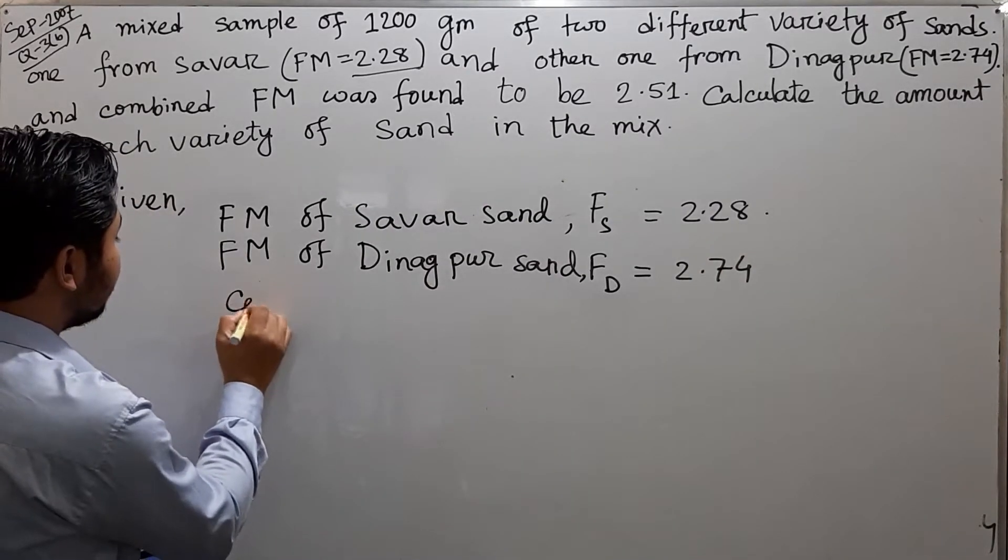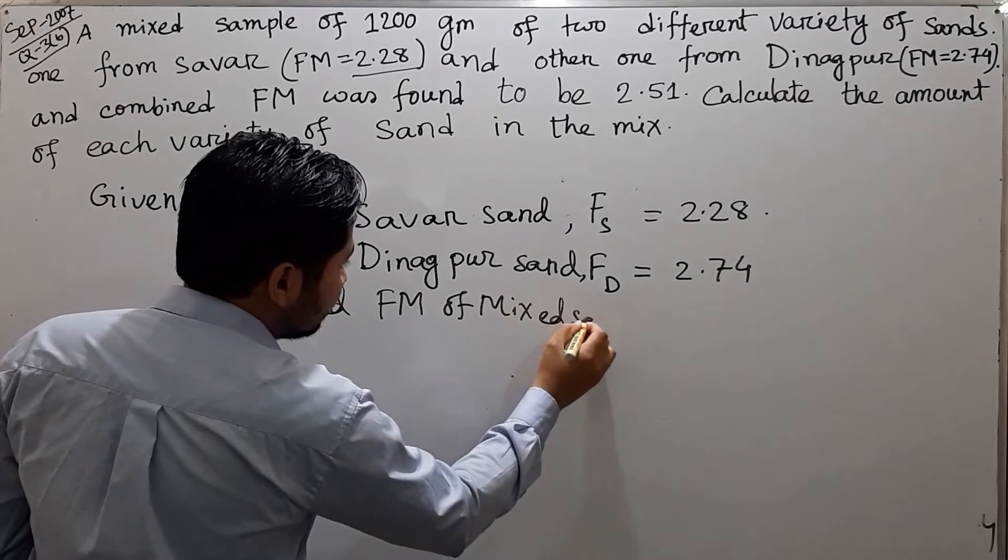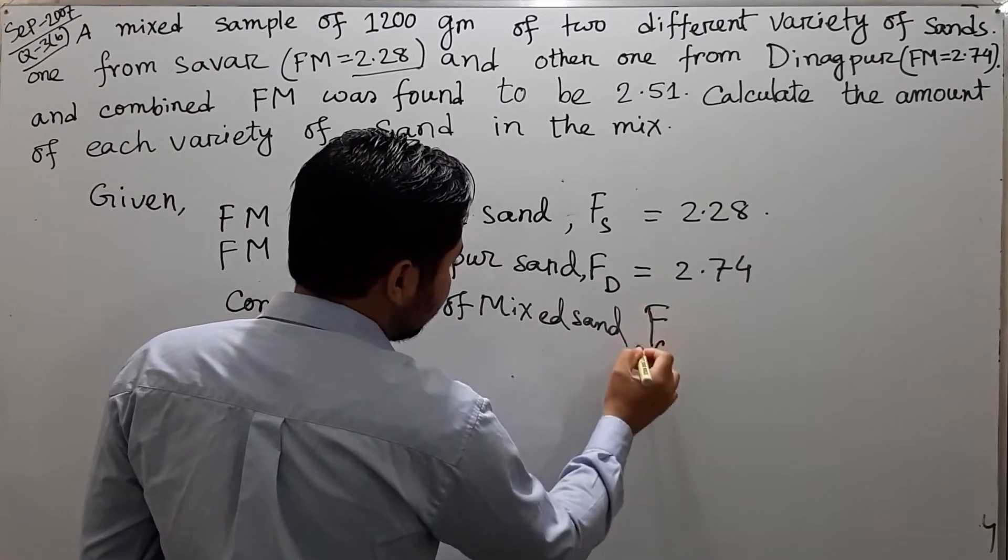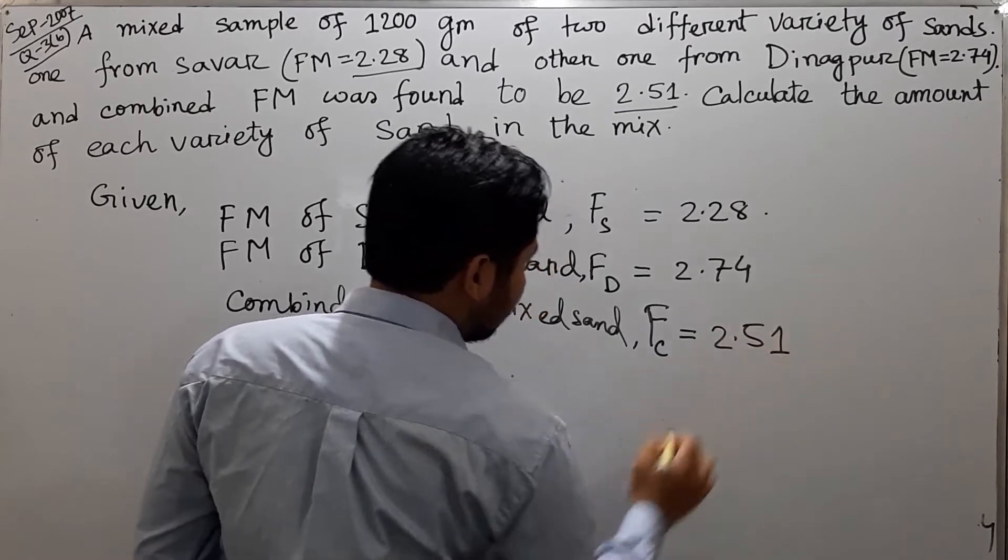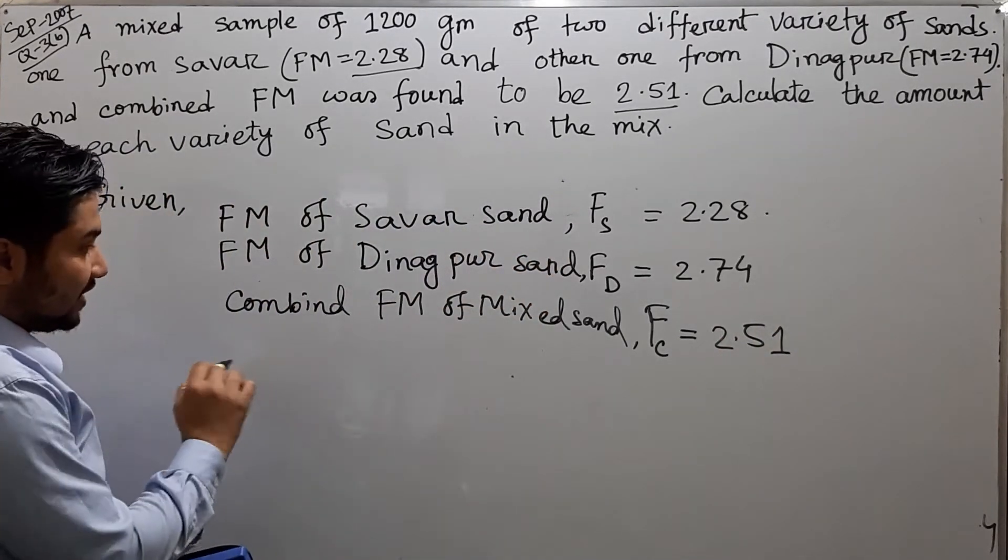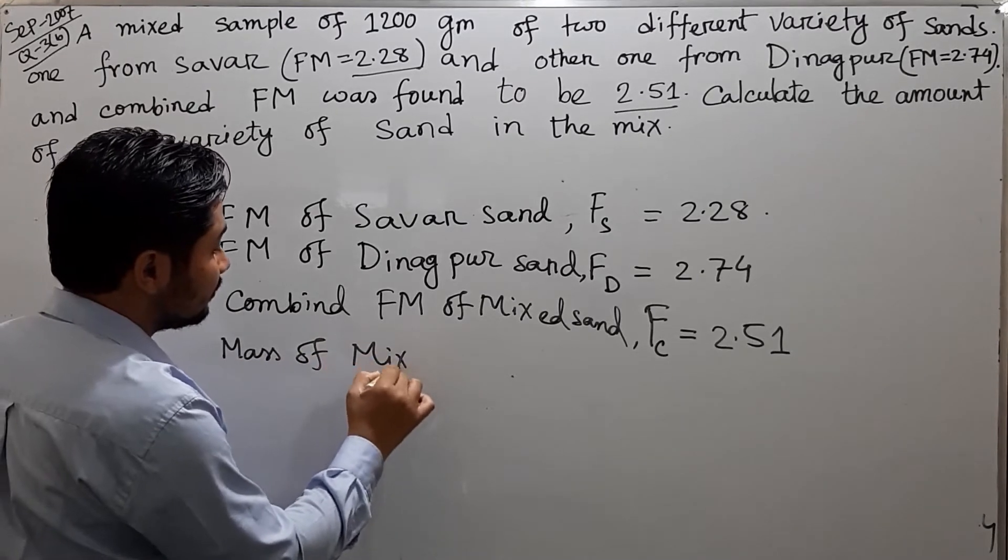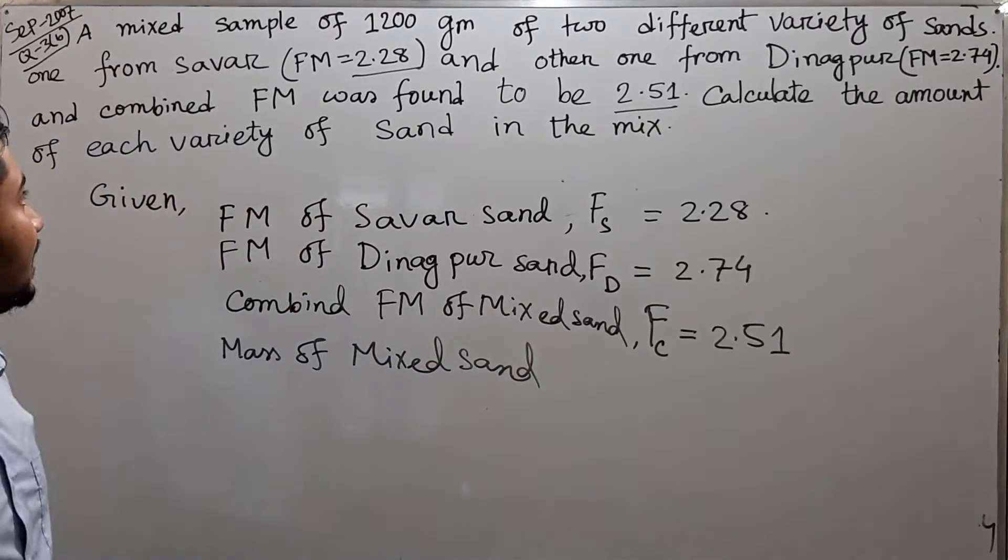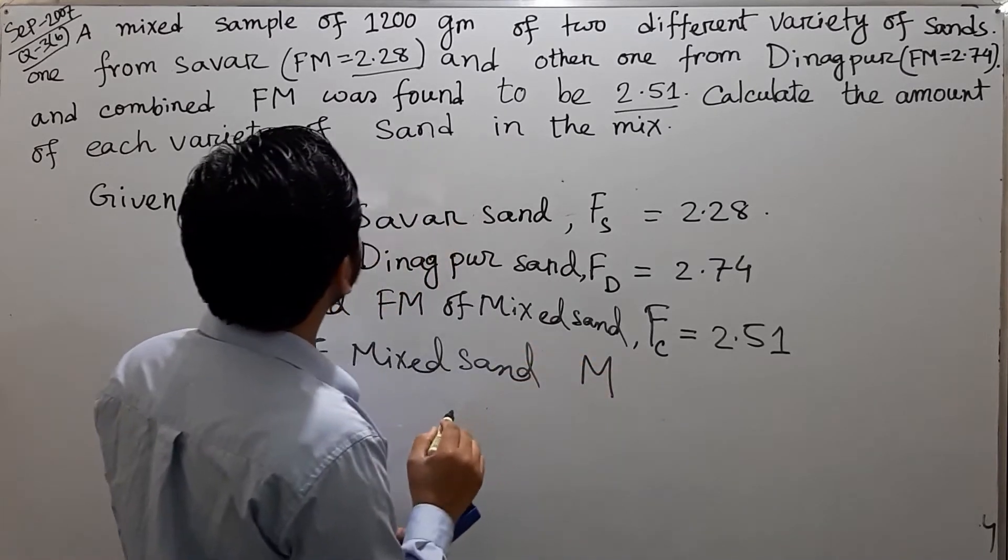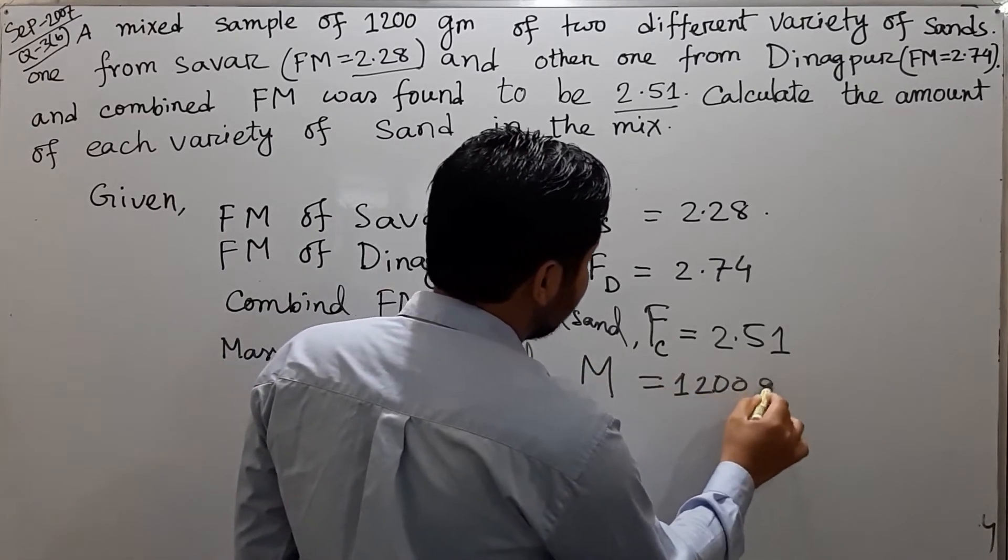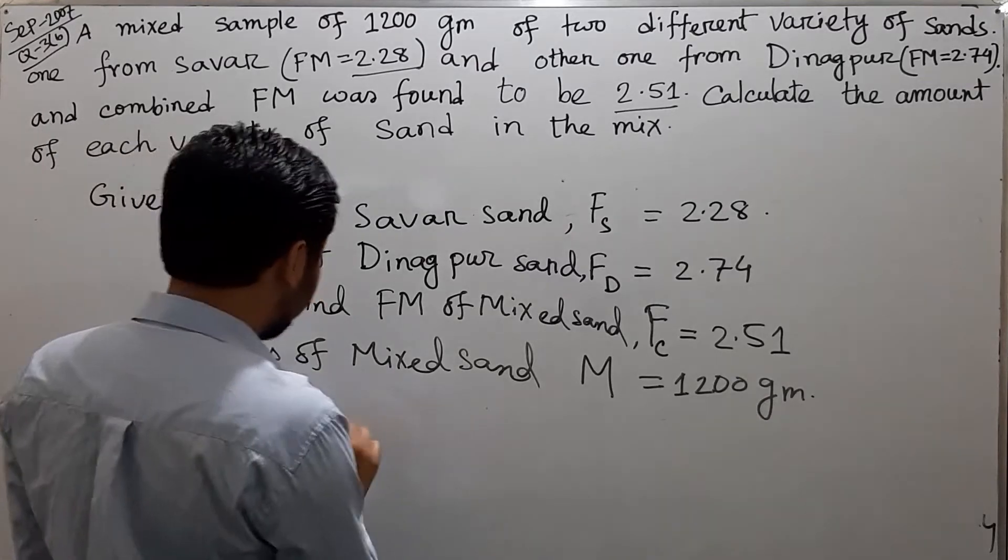Combined FM of mixed sand Fc equals 2.51. Total mass of mixed sand M equals 1200 grams. We need to find Ms and Md.